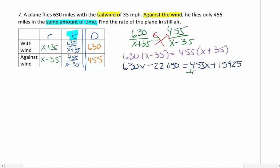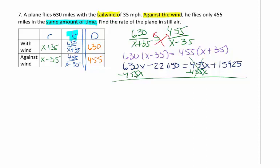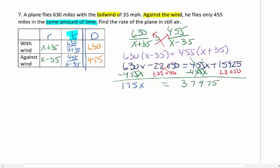I'm now going to collect like terms on the same side, subtracting the 455x from both sides so those cancel. When I subtract those two I'm going to get 175x. I'm going to add the 22,050 to both sides so those cancel, and when I add those two together I will get 37,975. My last step, using my calculator, take 37,975 and divide it by 175, and I get 217.